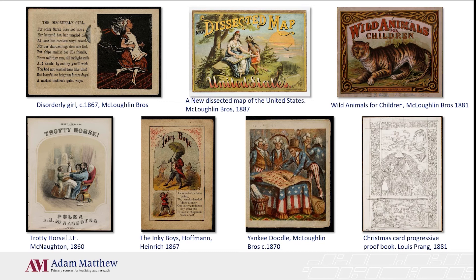Historians of childhood can combine literature with the more ephemeral material culture of toys and games — such as the dissected map shown at the top — sheet music, and stereographs, to help reconstruct 19th-century childhood as a concept and an experience. Book historians will also be able to trace how technological advances revolutionized the printing industry and how children's books evolved as a result.